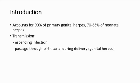Transmission can be through ascending infection, which is acquired from the mother with reactivated infection, but this is rare — less than 5% of cases. Another route of transmission to the neonate is through passage through the birth canal during delivery, where the mother has active genital herpes.